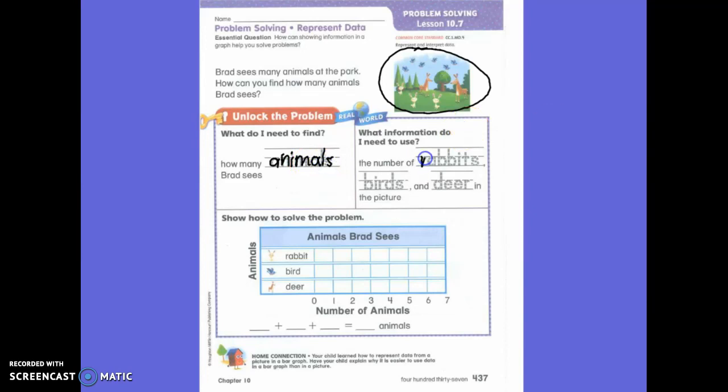So we need to look at the rabbits and count how many those are and put them on our graph. We need to look at the birds and count those, and then put that many or that number on the graph. And we also need to look at the deer. Okay. Are there any other animals in our picture? No, there's not.